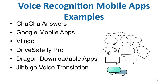Here are some examples of mobile apps incorporating voice technologies. Let's start with Chacha Answers, a question and answer service available for the Android platform, then Google mobile apps. V-Lingo is like Siri on the iOS platform — it's your personal assistant using voice. DriveSafely Pro reads your incoming text messages to you and lets you compose and send responses by voice. Then the Dragon downloadable apps, which are voice recognition software apps offering a variety of voice-based tools.